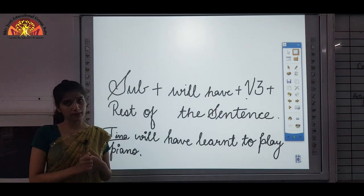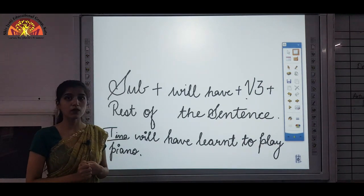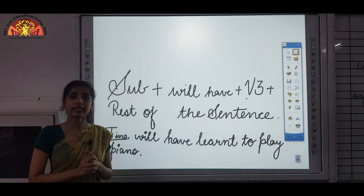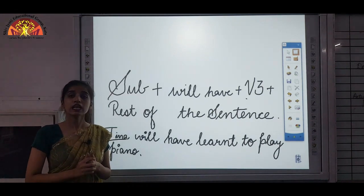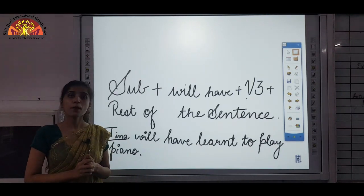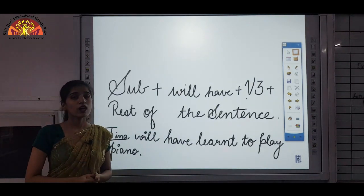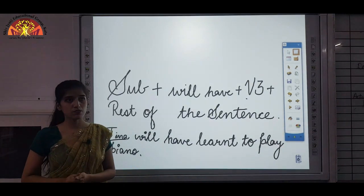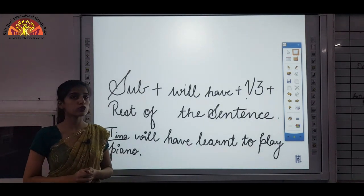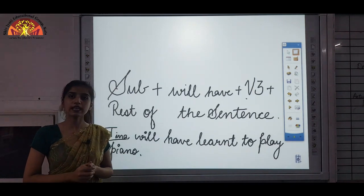We have covered nine tenses: simple present, simple past, simple future, present continuous, past continuous, future continuous, present perfect, past perfect, and future perfect tense. Now we are going to see the book work of chapters 11, 12, 13, and 14.